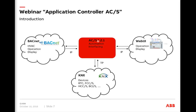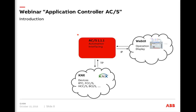Looking at the first component, the ACS121, which has an integrated BACnet interface — we communicate to BACnet via IP in both directions, and also to the web user interface. To all connected KNX devices we communicate via Twisted Pair. The version with BACnet is called ACS121, and we have a second component, the ACS111, with the same functionality but without BACnet interface.